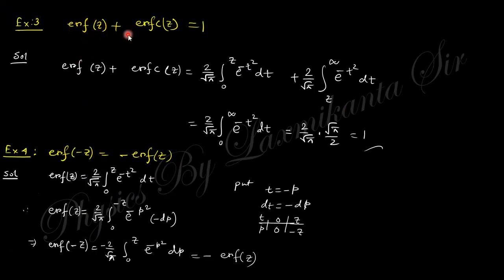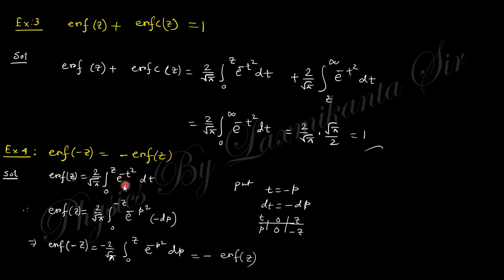Two more properties of the error function: First, erf(z) + erfc(z) = 1, because the combined limits run from 0 to z and z to ∞, giving the full integral from 0 to ∞, which evaluates to 1. Second, erf(-z) = -erf(z) — the error function is an odd function. This is shown by substituting t = -p in the definition of erf(-z), which gives erf(-z) = -erf(z).